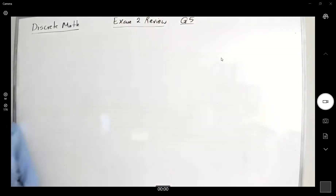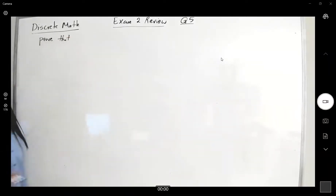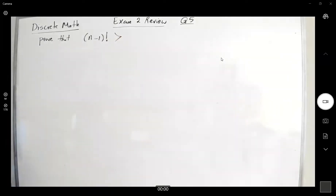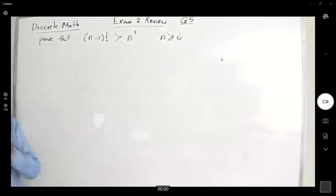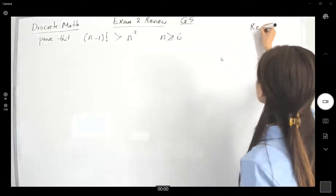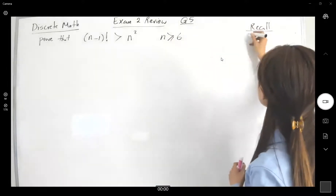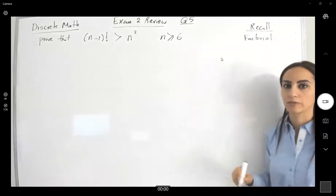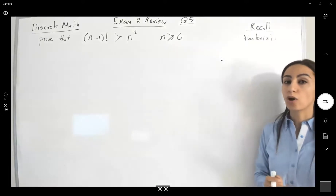Question five says: prove that n minus one factorial is greater than n squared, and n must be greater than or equal to six. First of all, recall that since we're going to use factorial, we're going to have it defined. Factorial is defined this way.